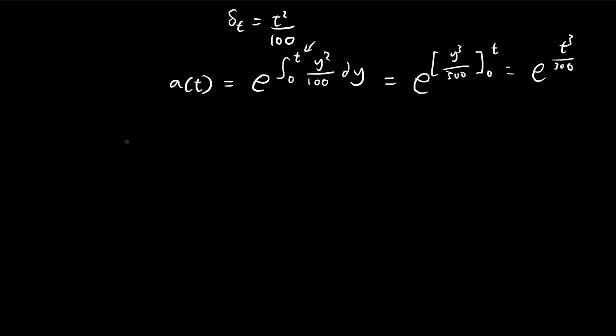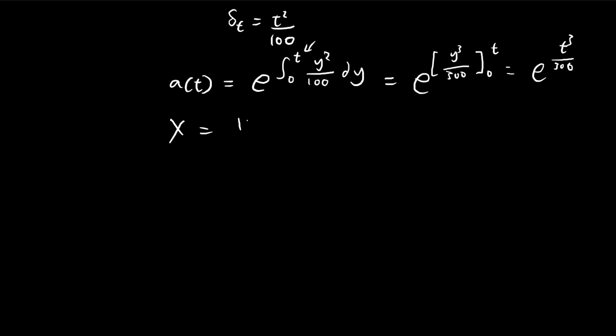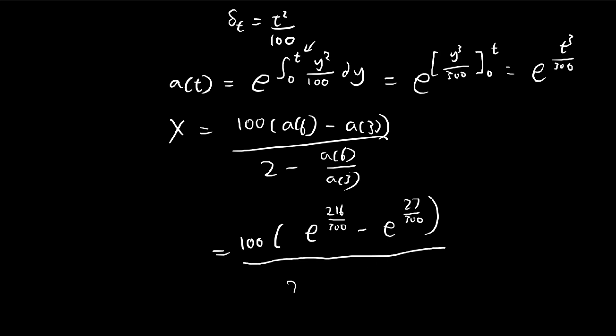So now we can substitute our numbers in. X is equal to 100(a6 minus a3) divided by 2 minus a6 divided by a3. So a6 is e to the 6 cubed over 300, which is e to the 216 over 100. a3 is e to the 27 over 100. And a6 over a3 is just this term divided by this term, so we get e to the 189 divided by 300.